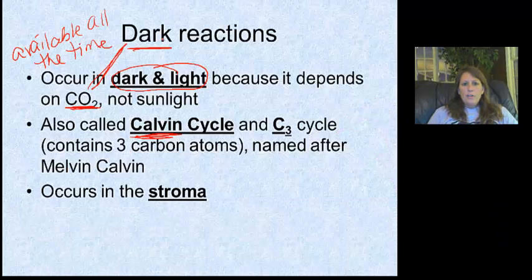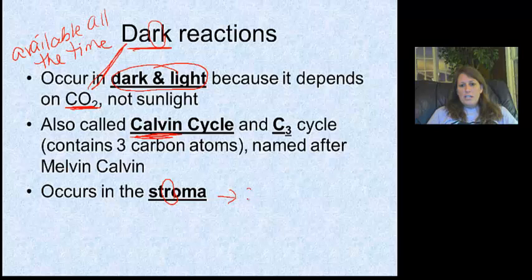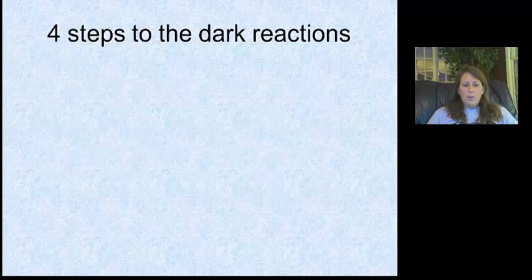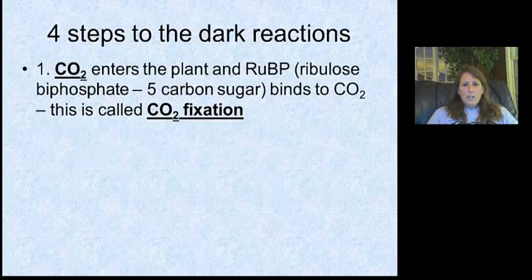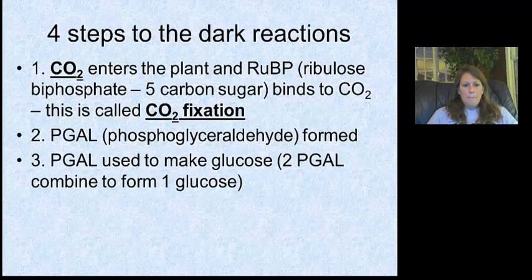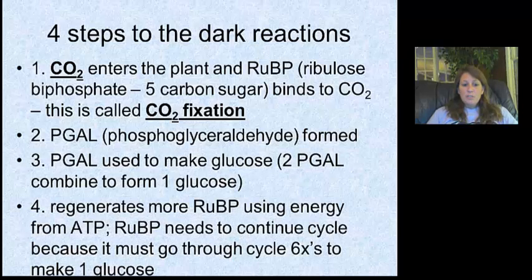The dark reactions take place in the stroma, which is inside the chloroplast — in between the thylakoid membrane stacks. Here are the steps. There are some other new terms here that we're not really going to be focusing on.